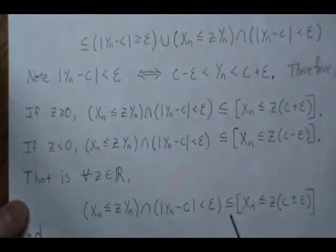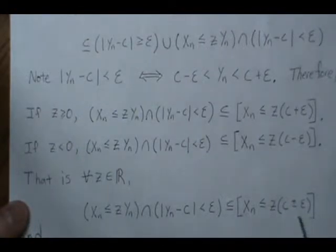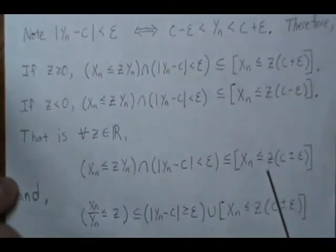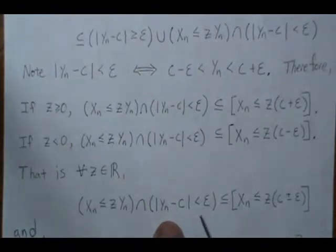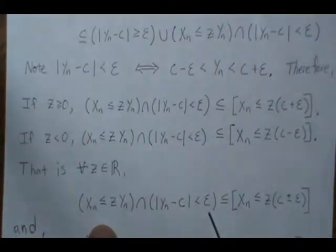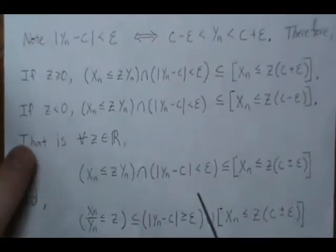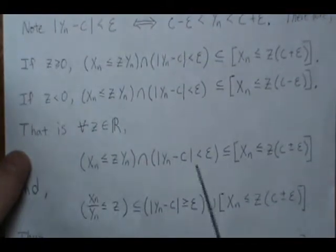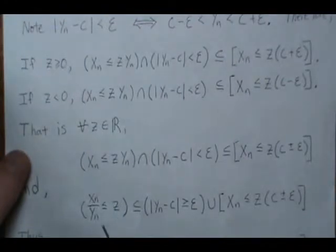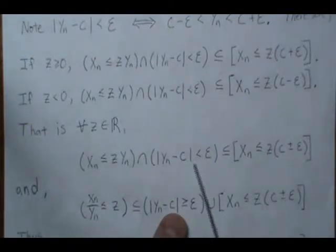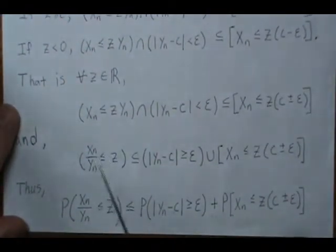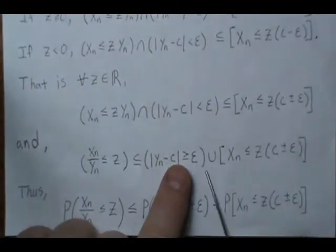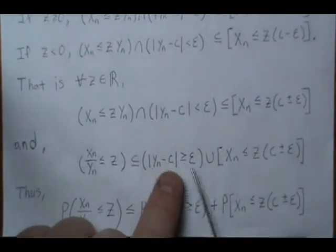So for all Z, the set {Xn/Yn ≤ Z} intersected with {|Yn − C| < ε} is a subset of {Xn ≤ Z(C + ε)} or {Xn ≤ Z(C − ε)} depending on the sign of Z. If we union with the complement {|Yn − C| ≥ ε} on both sides, one side becomes the entire sample space and we just get {Xn ≤ Z(C ± ε)}. So taking probabilities gives P(Xn/Yn ≤ Z) ≤ P(Xn ≤ Z(C + ε)) + P(|Yn − C| ≥ ε).